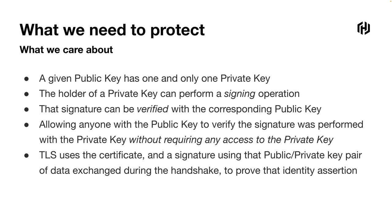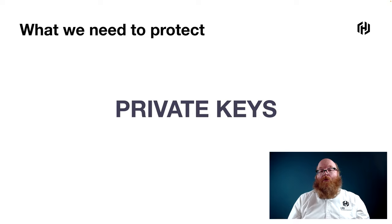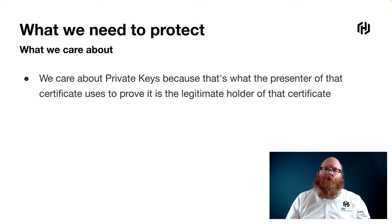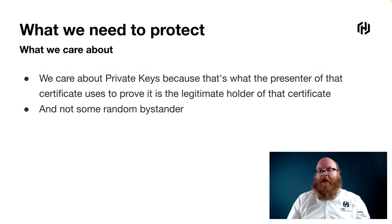That's how TLS does things. TLS will exchange certificates and create a signature over data — a signature created with the public-private key pair — over data exchanged during the handshake to prove the identity assertion. That public-private key pair is very important to TLS actually working properly. So what do we need to protect? We need to protect those private keys, which makes sense given the name — something we do not want to share. We care about those private keys because that is what the presenter of that certificate uses to prove it is the valid holder of that certificate and not some random bystander.